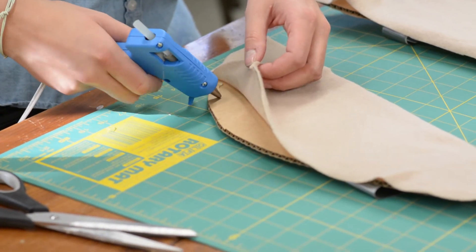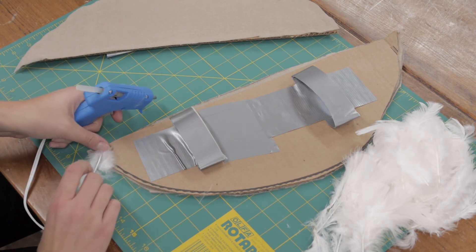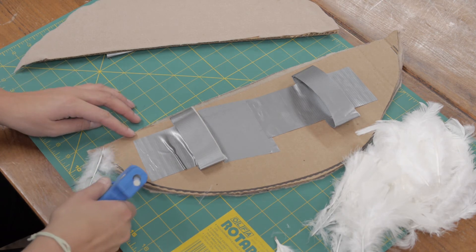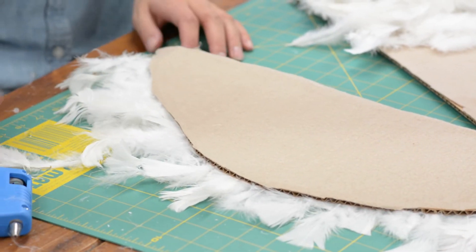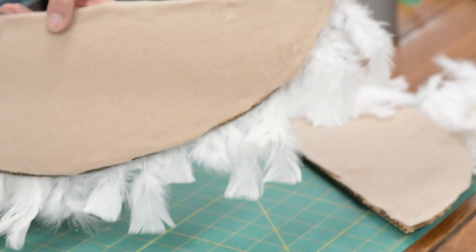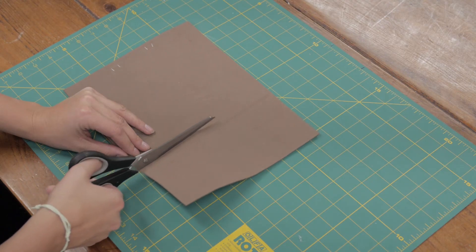Next, glue or duct tape the feathers onto the bottom part of the wing.